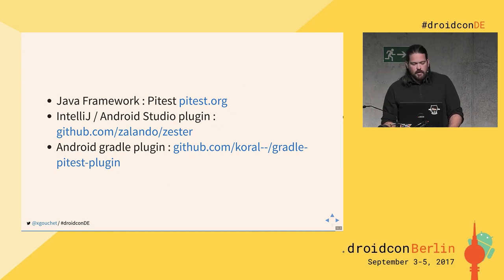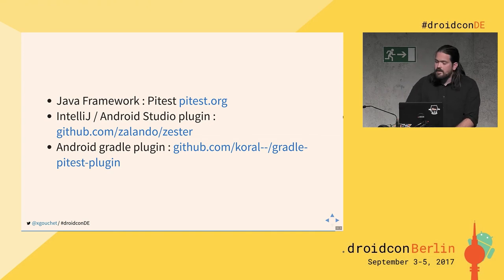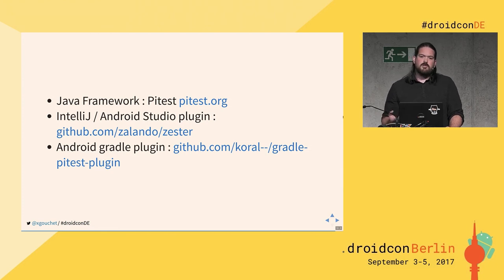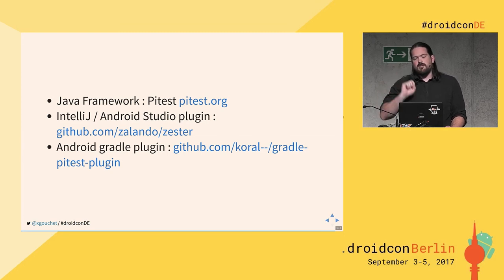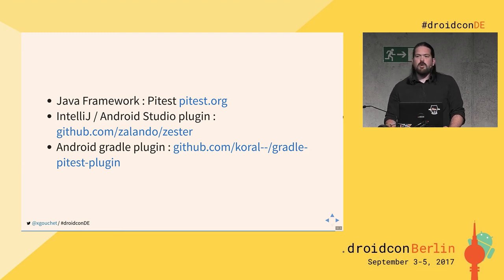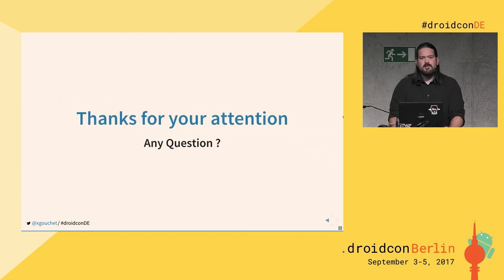These are the links to the frameworks I use. The base one is the PITest framework. There's also a plugin called Zester for Android Studio or IntelliJ that lets you run mutation testing on a single file — similar to the green run arrow but for mutation testing. And the other plugin I discussed works with Android projects for a full mutation pass across all your code. That's it — thanks a lot for your attention, and I think we have time for a small Q&A.